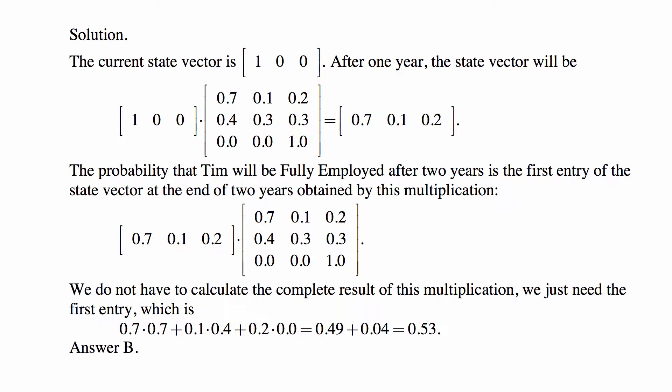So, for example, 0.7, the first entry, is obtained by multiplying 1×0.7 + 0×0.4 + 0×0. Then 0.1 is obtained by multiplying the row vector by the second column: 1×0.1 + 0×0.3 + 0×0. And 0.2, the last entry, is obtained by 1×0.2 + 0×0.3 + 0×1. Effectively, the answer is just the first row of the matrix, so you don't really have to do any calculations — you can see this immediately.